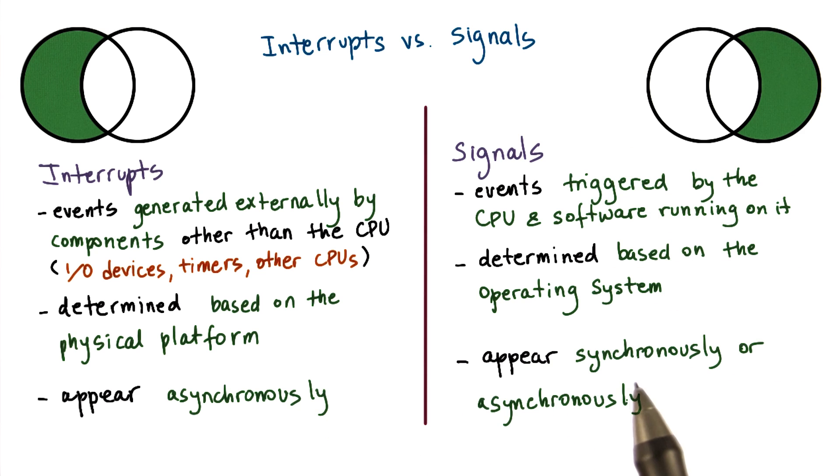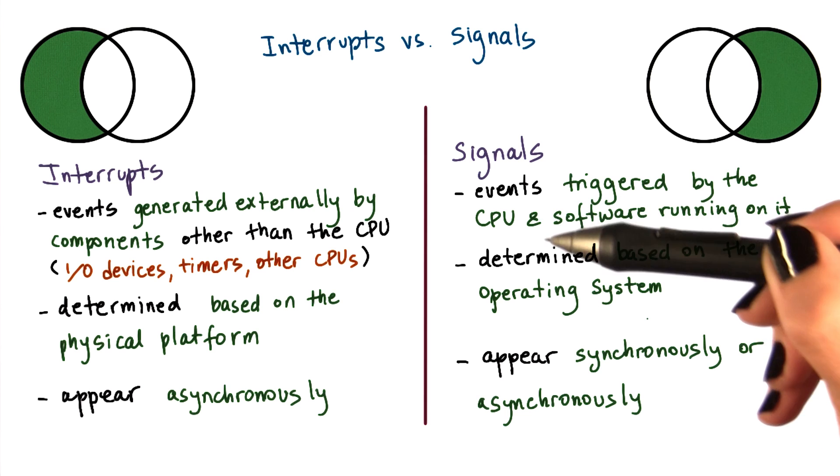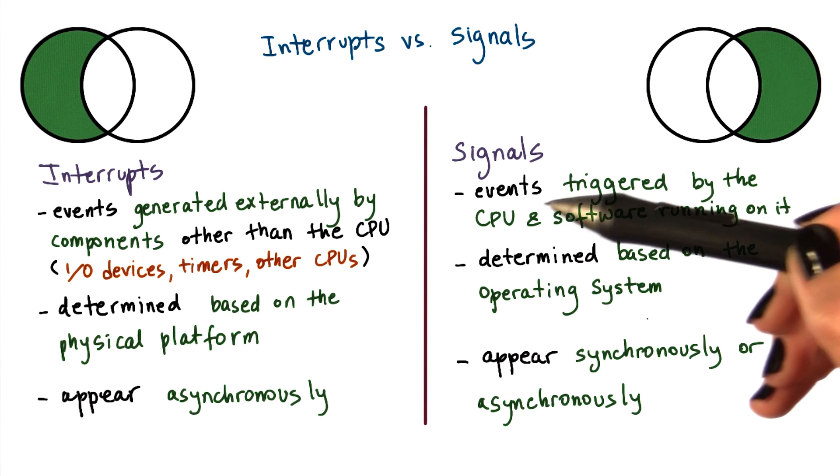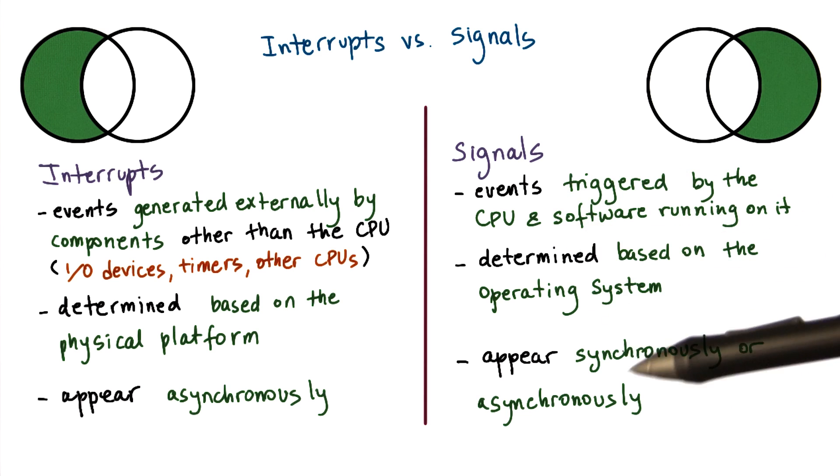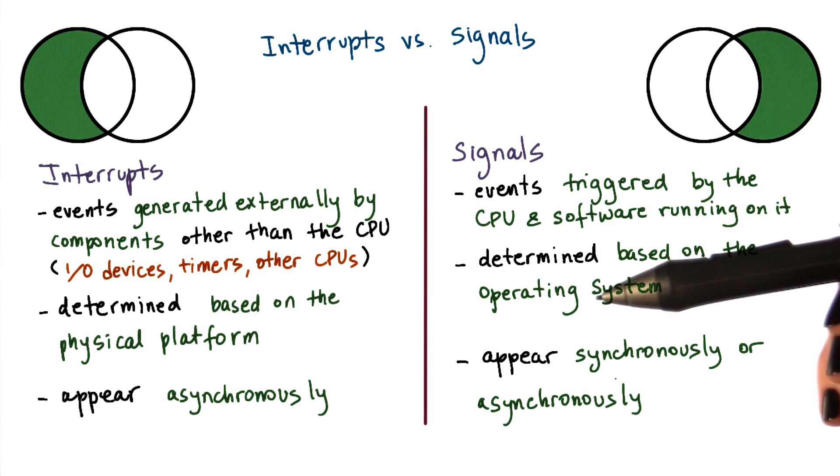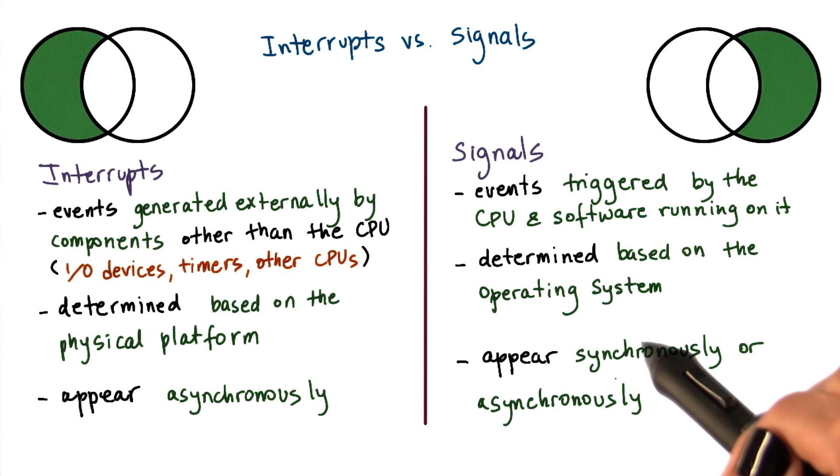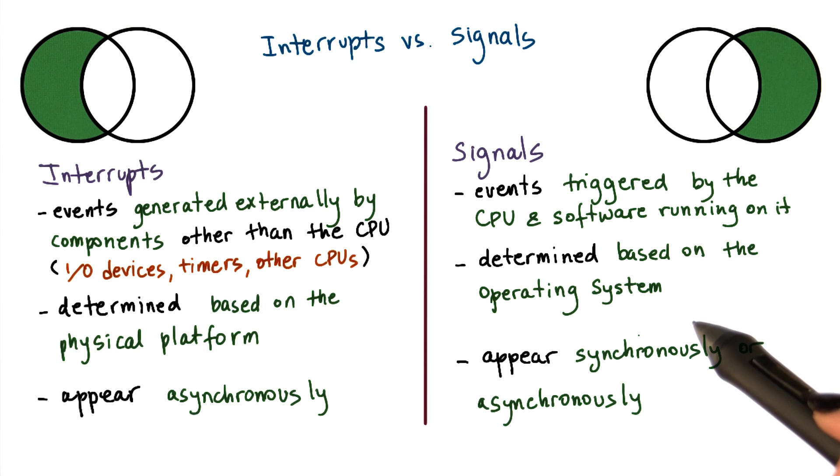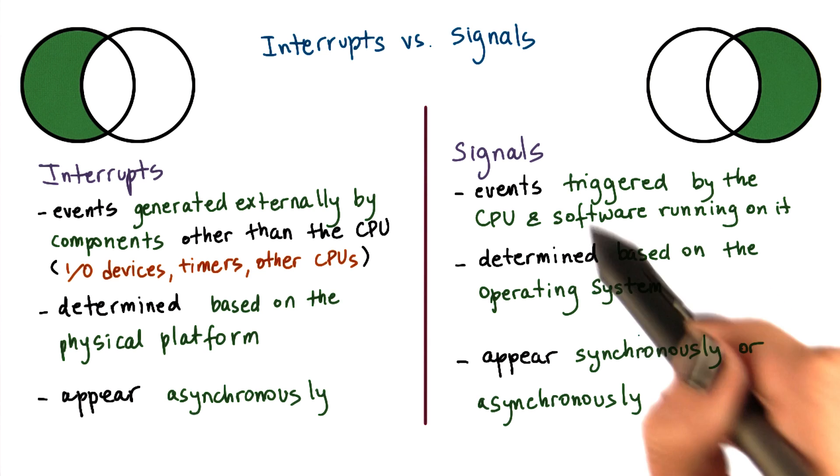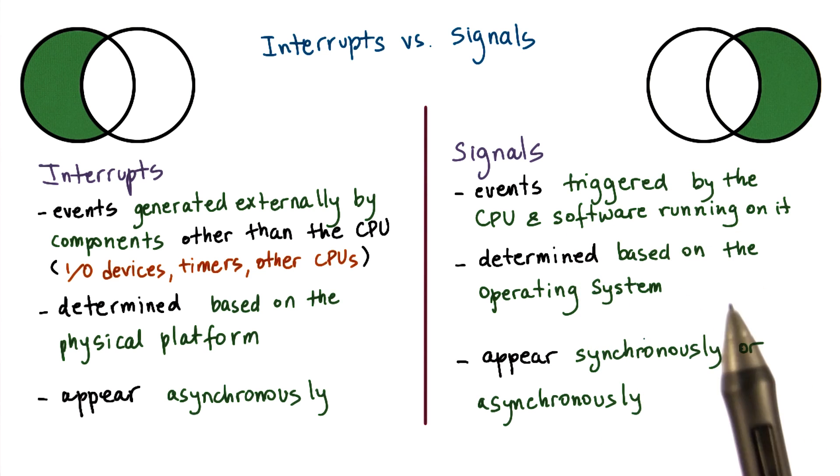Unlike hardware interrupts, signals can appear both synchronously and asynchronously. By synchronous, here we mean that they occur in response to a specific action that took place on the CPU, and in response to that action, a synchronous signal is generated. For instance, if a process is trying to touch memory that has not been allocated to it, then this will result in a synchronous signal.